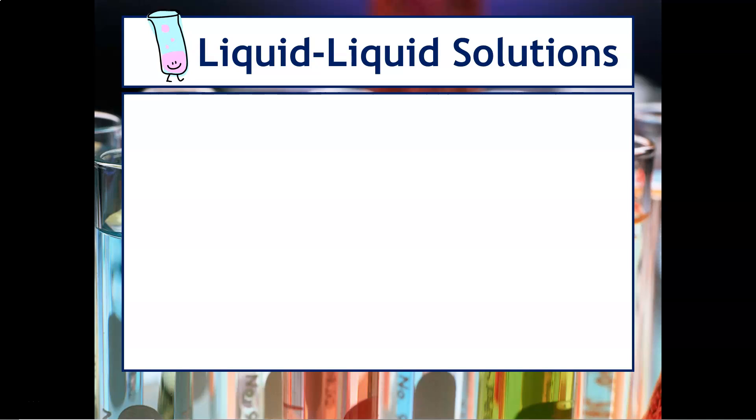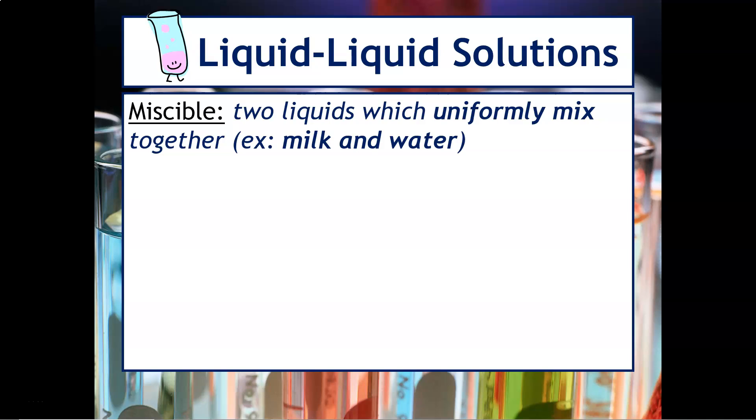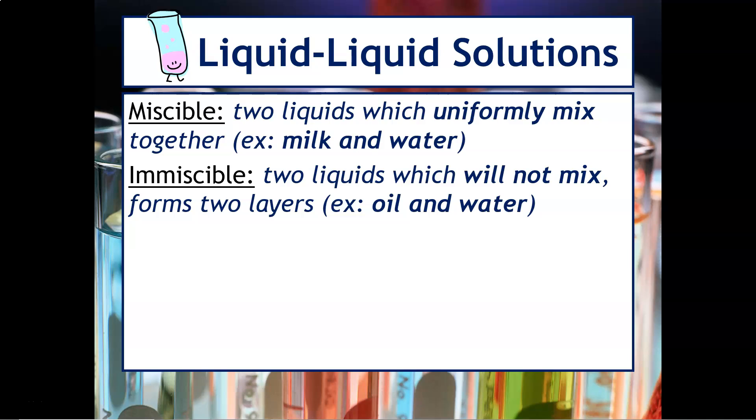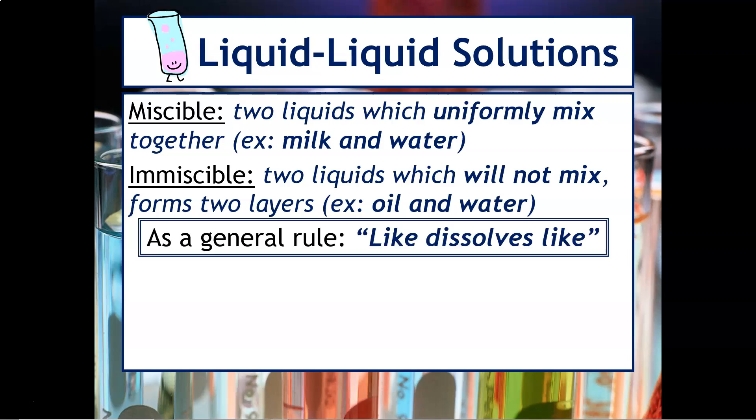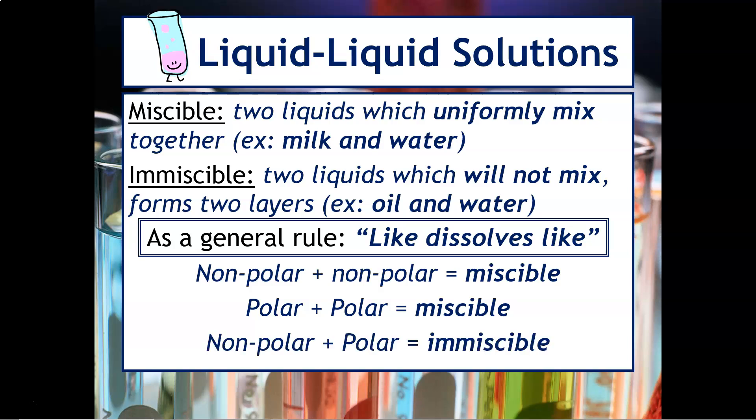There's some terminology that you have to be familiar with in terms of liquid-liquid solutions. At this point we've only been talking about solid-liquid solutions. So with liquid-liquid solutions, you may have heard the term miscible. This basically means that you have two liquids which uniformly mix together, for example milk and water. If something is considered immiscible, that's where you have two liquids that will not mix and you'll see actually layers form, for example oil and water. And then in chemistry, there's a general rule that we use to help us understand what's going to be a good solute or solvent, what's going to be able to dissolve in each other more easily, and that general rule is like dissolves like. So what that means for chemists is if you have a nonpolar solute and a nonpolar solvent, we're going to say that's miscible. If you have a polar solute and a polar solvent, that's also miscible. But if you were to have two different ones like nonpolar and polar, that is considered immiscible.